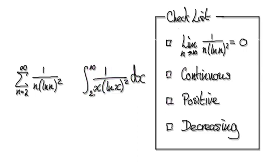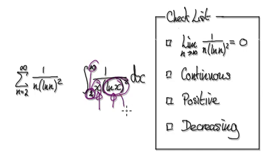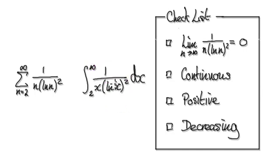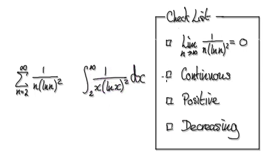Is it decreasing? As x moves from 2 to infinity, natural log keeps on growing, and that thing squared will just keep on growing. The whole denominator keeps on growing, and 1 divided by something that keeps on growing — yes, it is going to decrease. The whole thing is going to decrease.